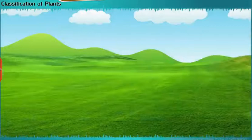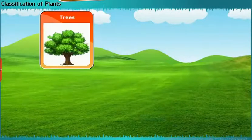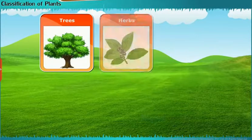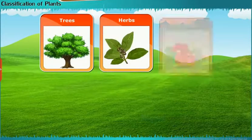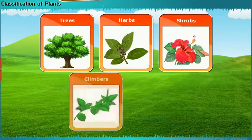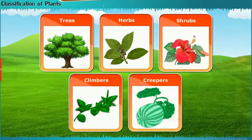Plants are classified into trees, herbs, shrubs, climbers and creepers.